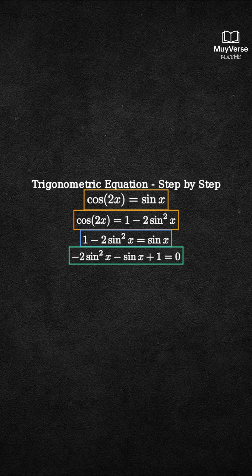For a positive leading coefficient, multiply both sides by negative 1. 2 sine squared x plus sine x minus 1 equals 0.